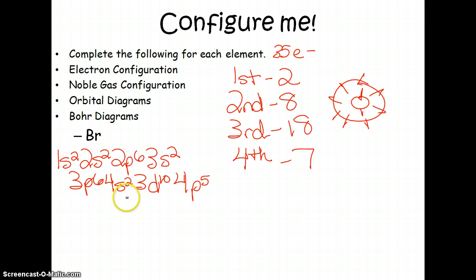Noble gas configuration, up one all the way over to the noble gas. The noble gases are gone. And then you just continue. So we got argon, 4s2, 3d10, and then ending on 4p5.